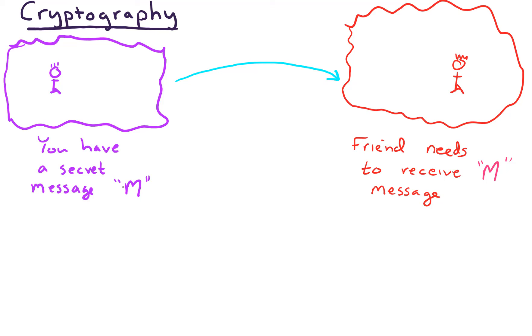We'll call that M. And you have a friend that needs to receive the message, so they also need to receive M. Now the problem is that watching our communication we have people who might be spying on the communication.